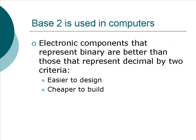The base 2 number system is used in computers instead of base 10 because electronic components that represent binary are better than those that represent decimal based on two criteria. They're easier to design, and they're cheaper to build.